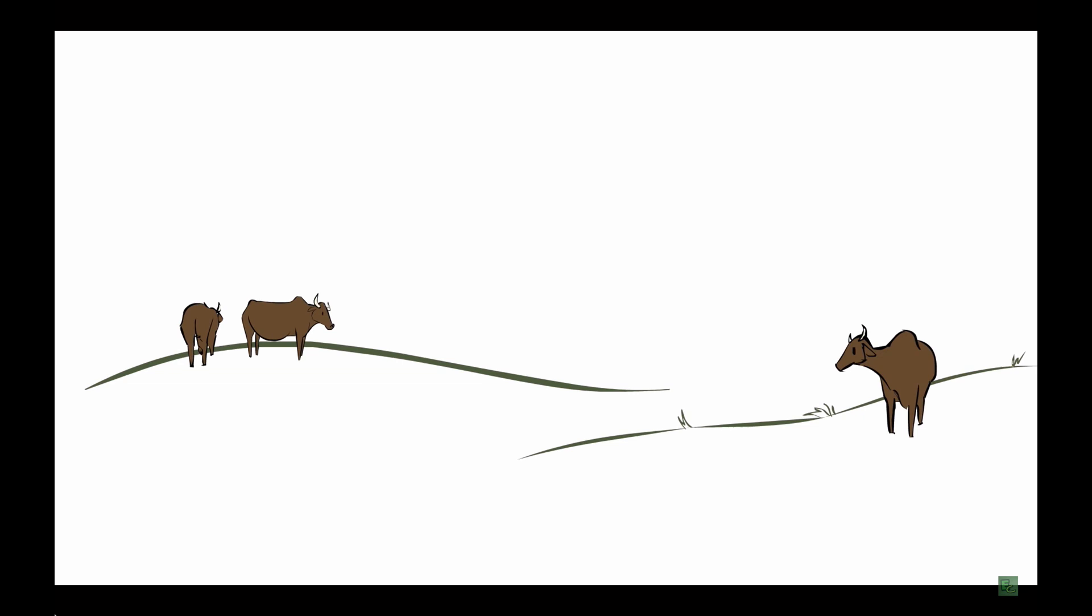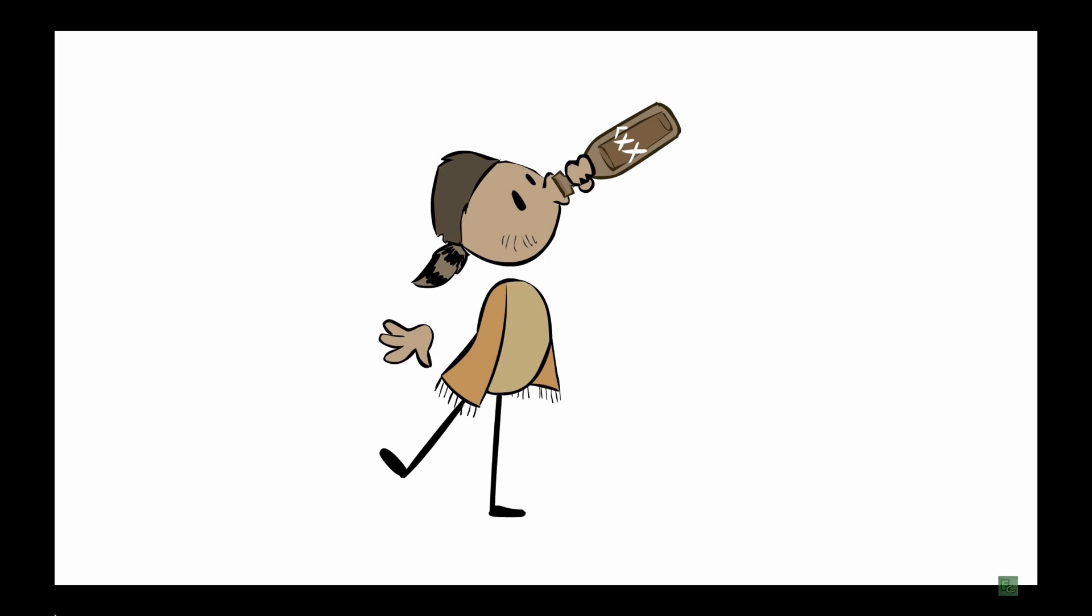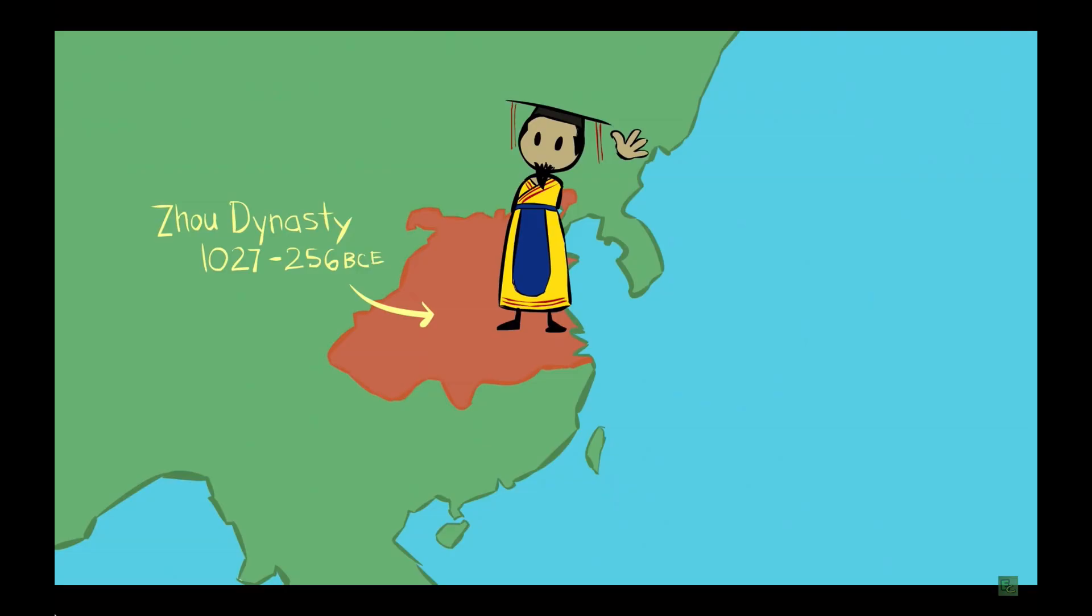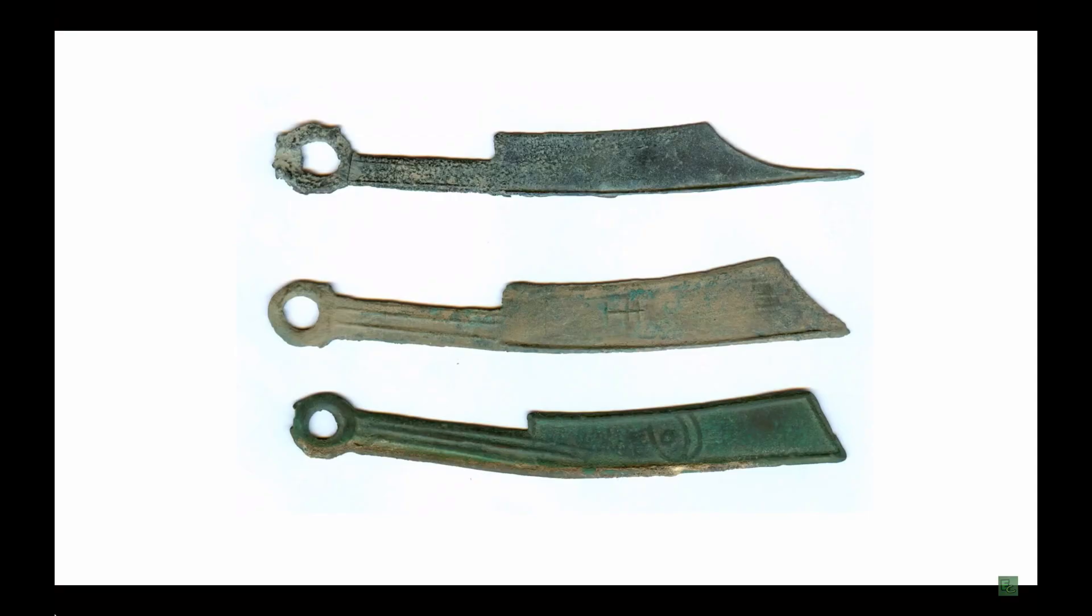When Europeans arrived in the Americas, alcohol often served as currency. You could literally drink your paycheck. Cigarettes have often become money of prisons and POW camps. Back in ancient China, money in the shape of tools and then knives became some of the first examples of precious metal money.